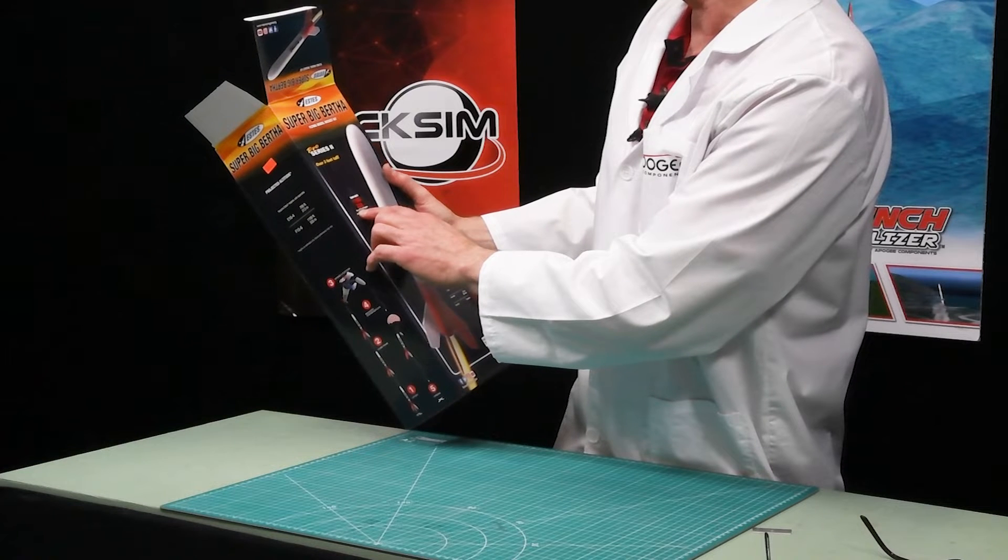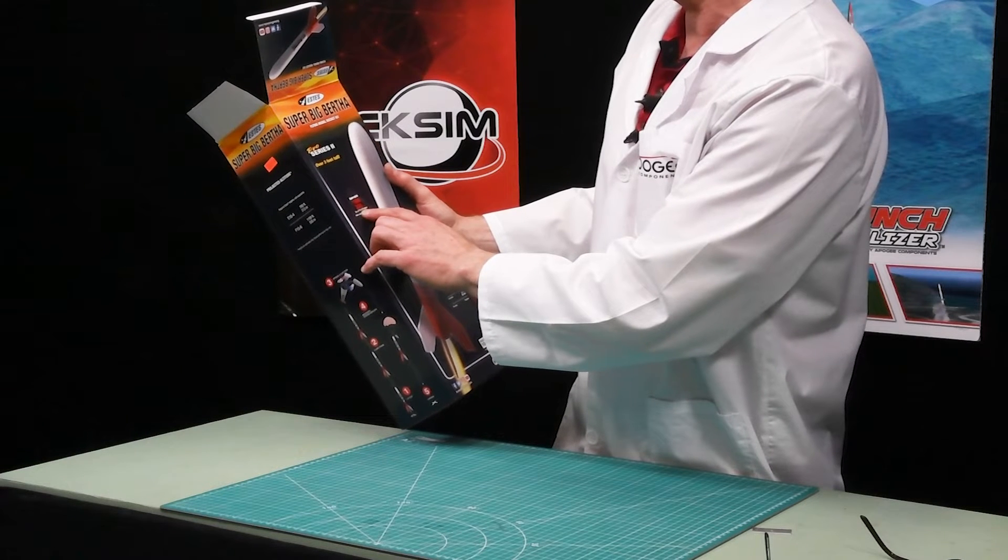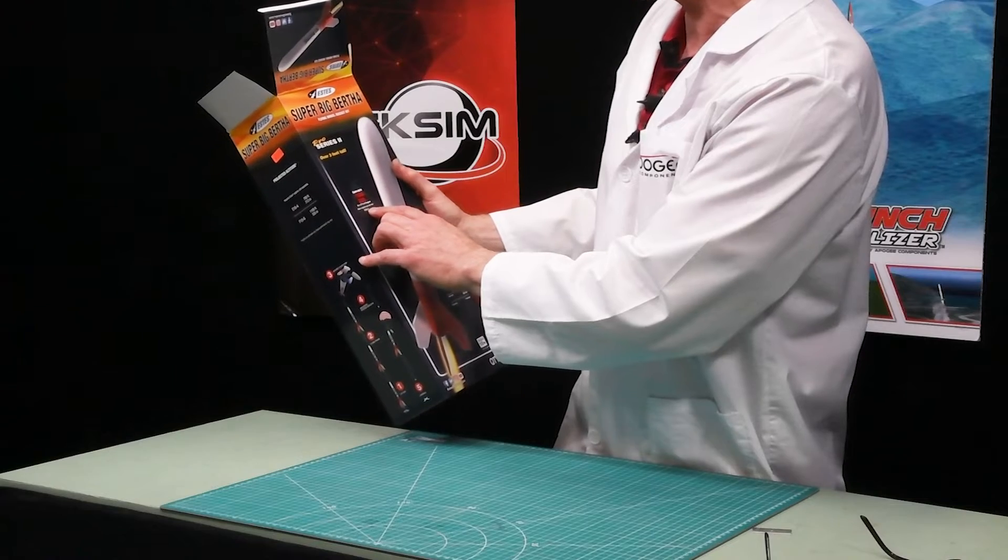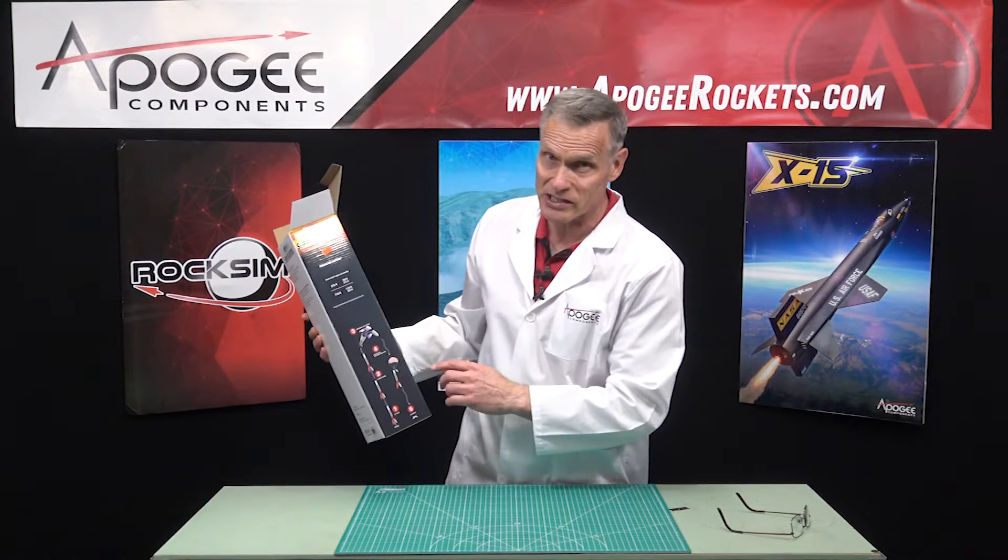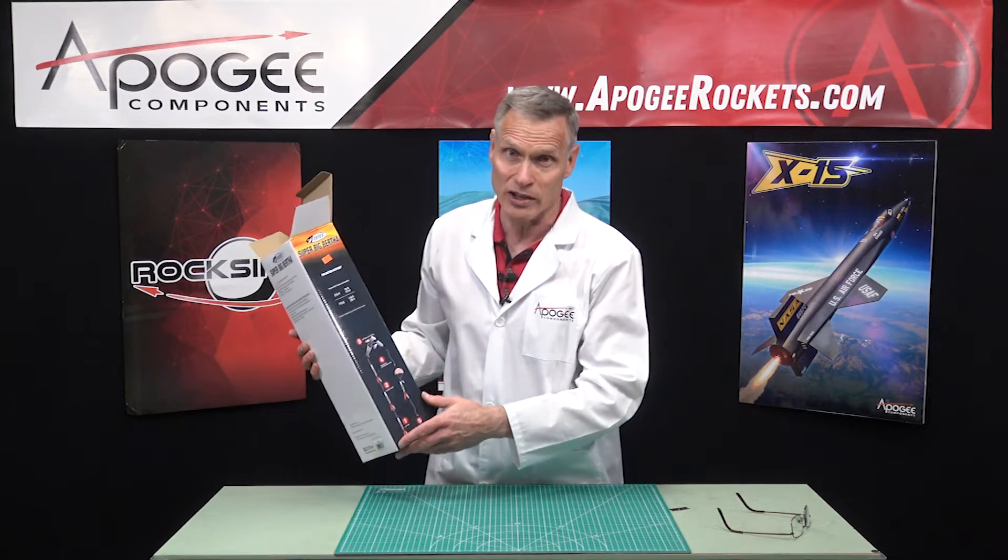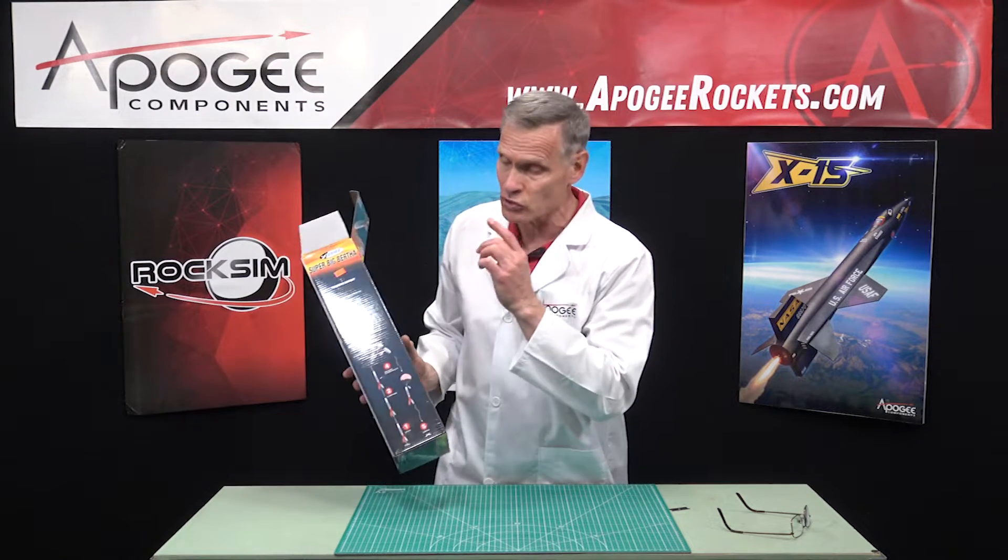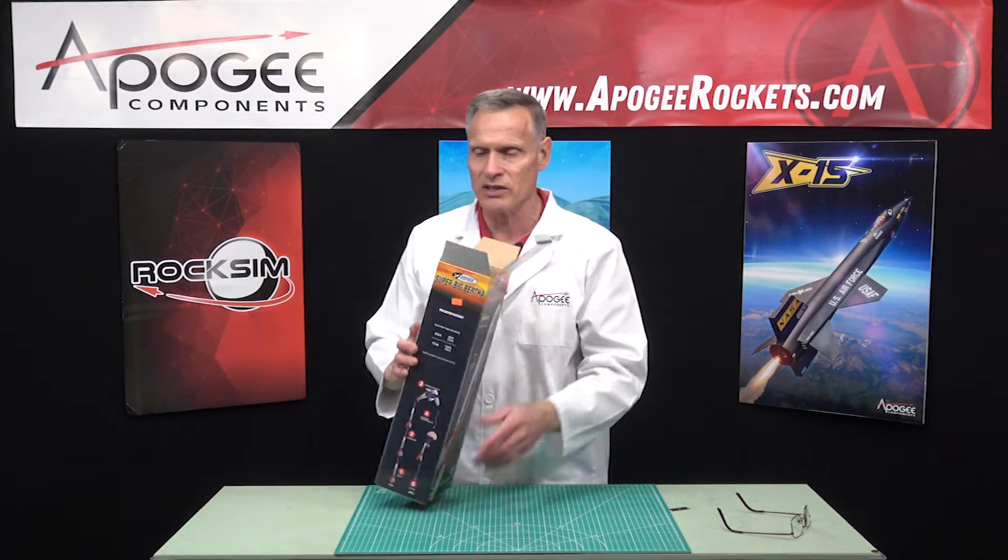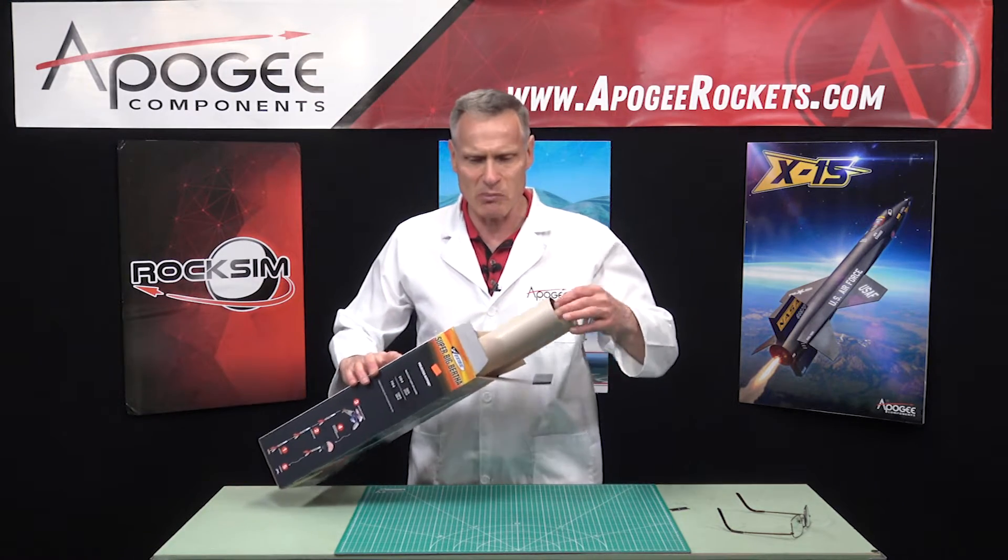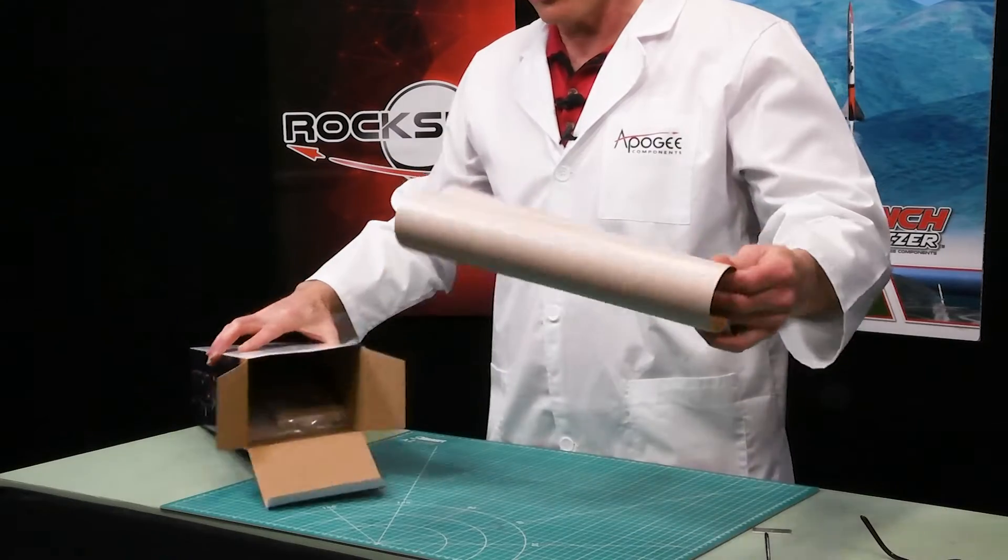It flies to 1,100 feet on an F-16-6, or you could use an E-16-4. You can also use Aerotech or Cessaroni motors. Those are both 29-millimeter diameter motors, so that's what this kit is. We'd classify it as a mid-power kit.